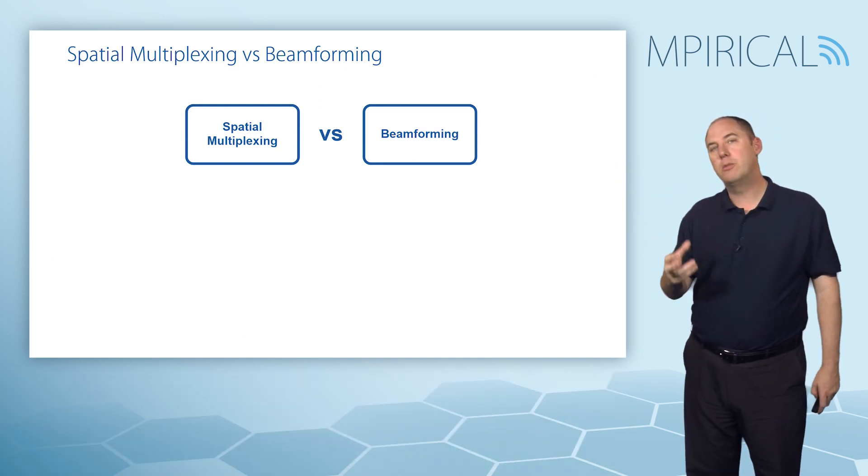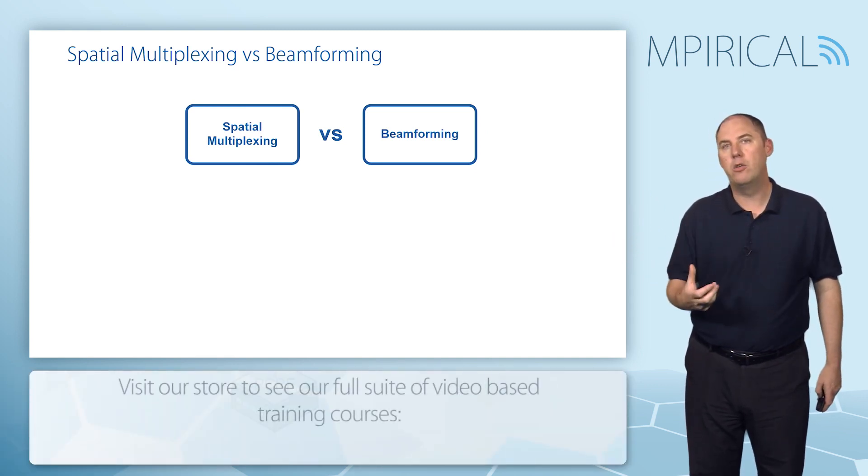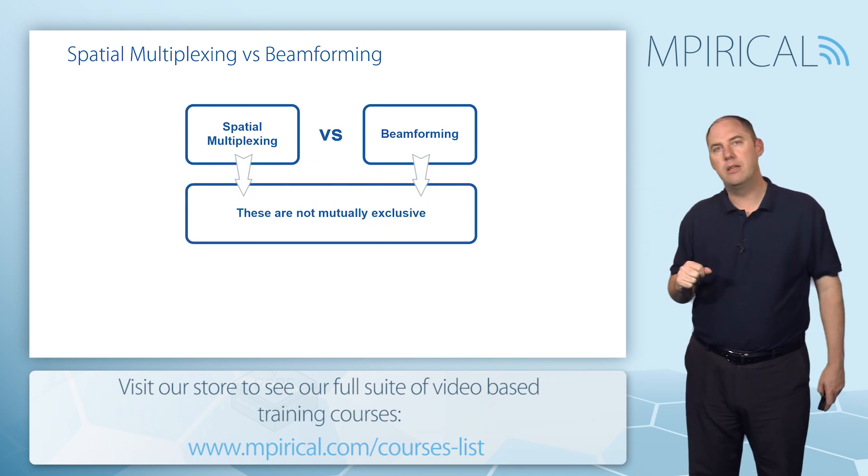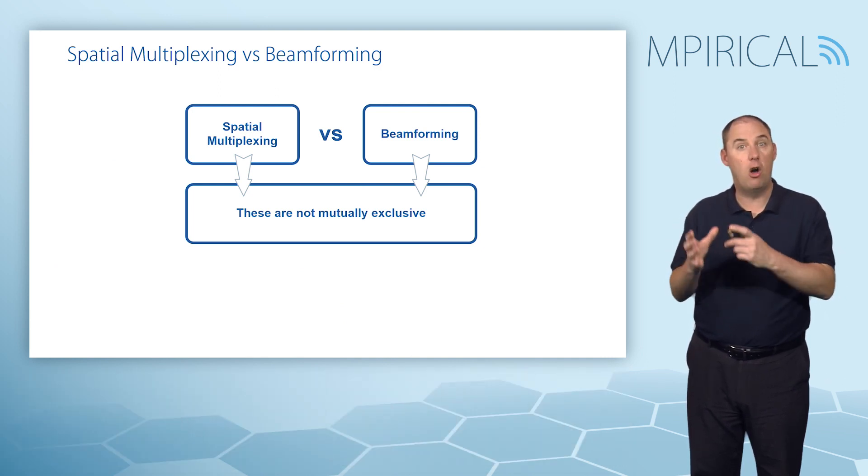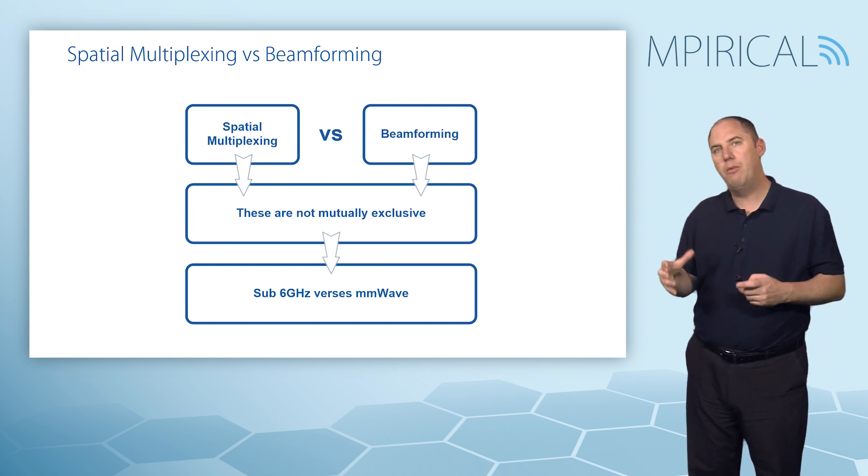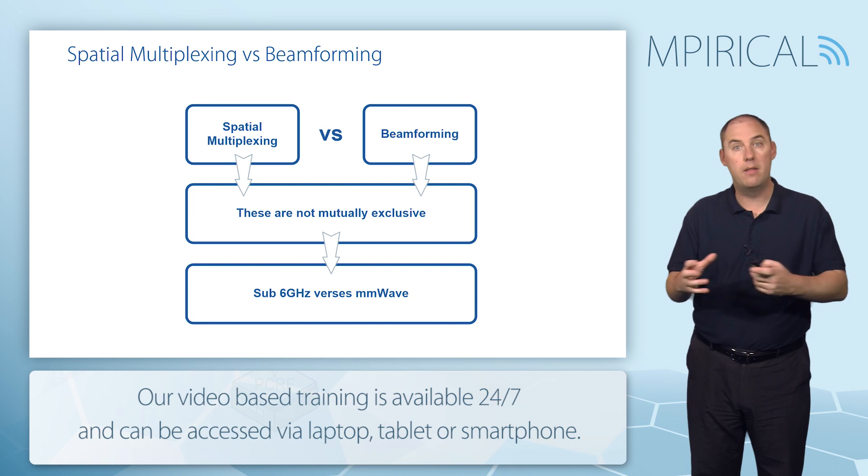First of all, we've got spatial multiplexing—we've had that for a long time. We've had beamforming for a long time in other systems such as 4G. They are not mutually exclusive, so you can be doing beamforming and then potentially put some spatial multiplexing onto that beam. What we need to discuss is how they relate to each other with respect to the sub-6 gigahertz band and the millimeter wave.